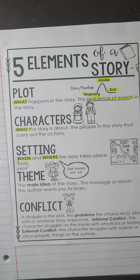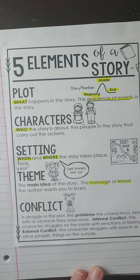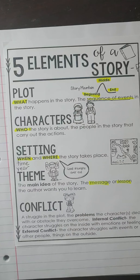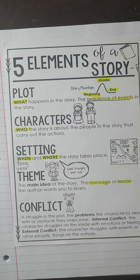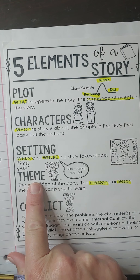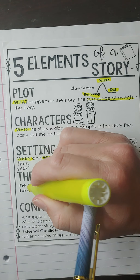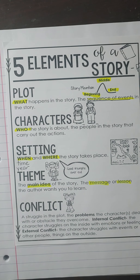The next element of the story is something we'll be diving into later this year — it's the theme. The theme is the message or the lesson that we're learning in the story. When we read Edward the Emu and Edwina the Emu, their lesson or message was that we should always be ourselves and not try to be like others. We call that the theme — sometimes also called the main idea — it's the point of the whole story.